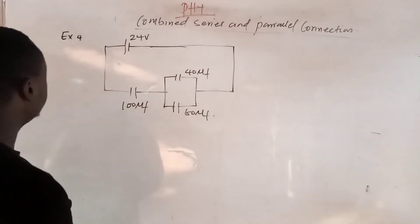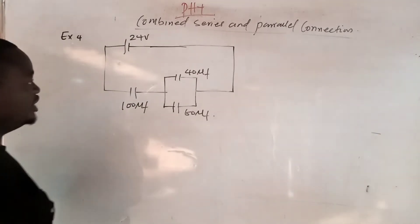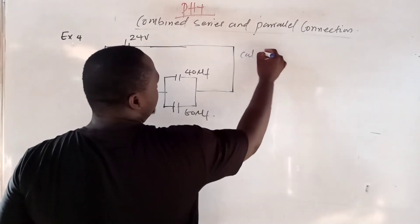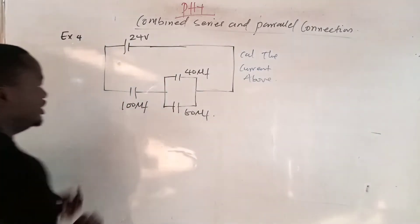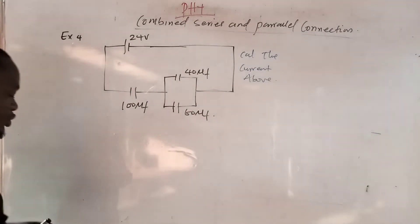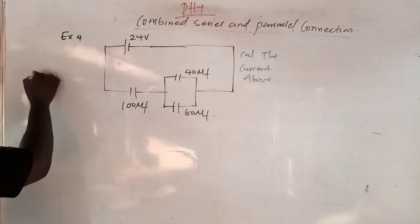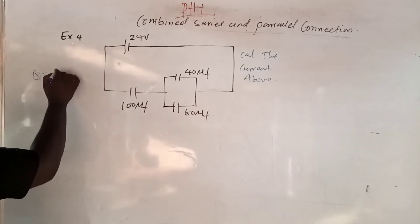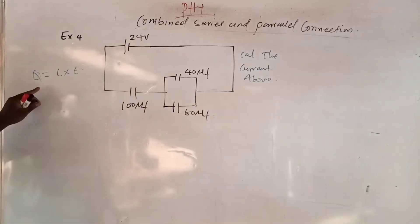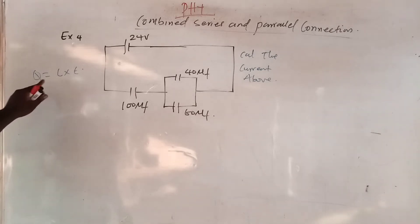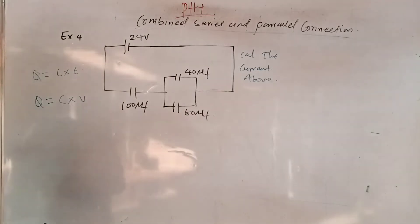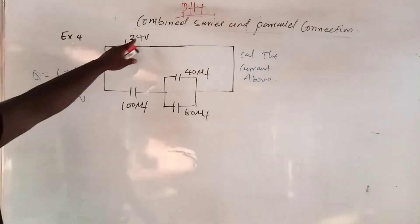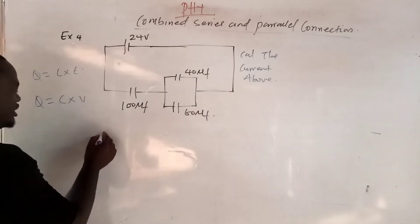Example number 4 — we have a circuit and the question asks you to calculate the current. Remember, if you want to calculate current: charge Q = current × time. But we don't know charge. Before we do anything, we have to calculate charge first, and for that we need Q = C × V, which means we have to calculate the effective capacitance CT first.